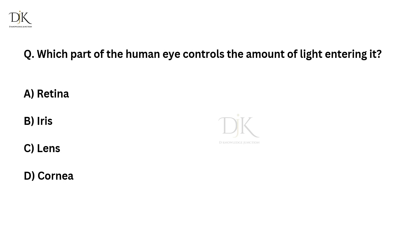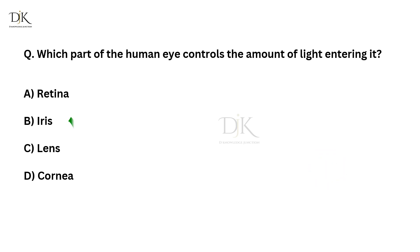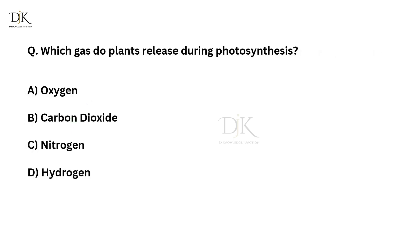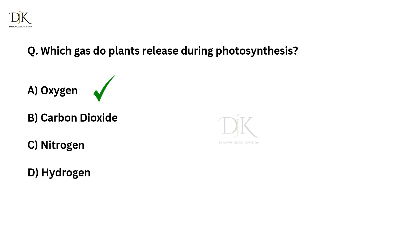Which part of the human eye controls the amount of light entering it? Correct answer is iris. Which gas do plants release during photosynthesis? Correct answer is oxygen.